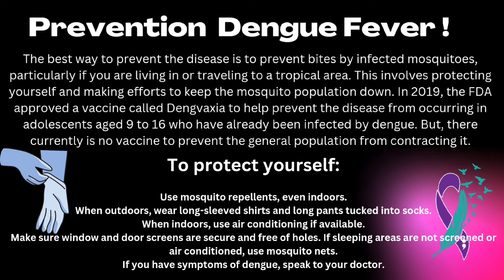If you want to protect yourself, use these methods: Use mosquito repellents even indoors. When outdoors, wear long-sleeved shirts and long pants tucked into socks. When indoors, use air-conditioning if available. Make sure window and door screens are secure and free of holes. If sleeping areas are not screened or air-conditioned, use mosquito nets.